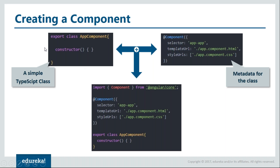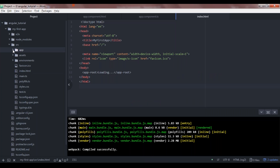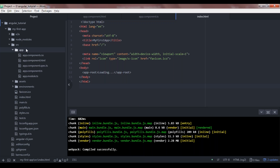Let us have a look at the exact code of a component. We have a simple TypeScript class named AppComponent. We attach the @Component decorator to this class to decorate it as a component. Inside the @Component decorator, we provide the metadata: selector, templateUrl, and styleUrls. Now let's go ahead and create our own component. All the logic related to your application resides inside the app folder, so I'll create my components inside the app folder.